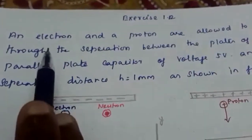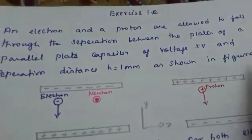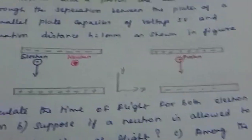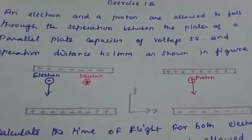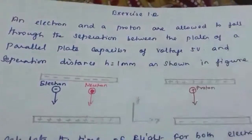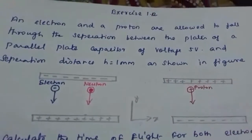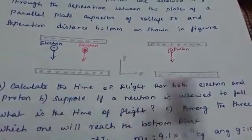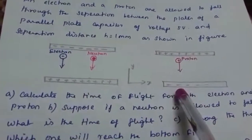Exercise 1.12: An electron and a proton are allowed to fall through the separation between the plates of a parallel plate capacitor of 5 volt and separation distance equal to 1 millimeter. We have to calculate the time of flight for both the electron and the proton — how much time is taken for each to reach the bottom.